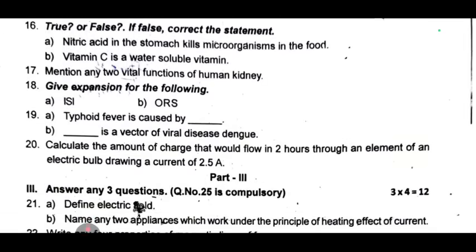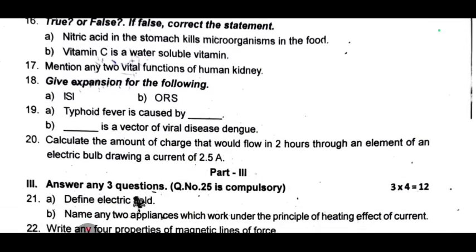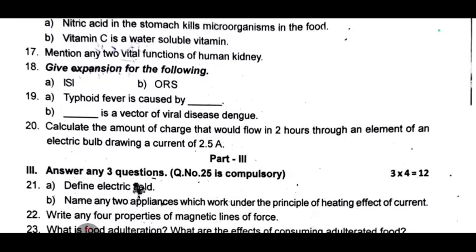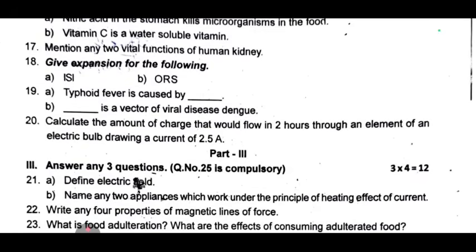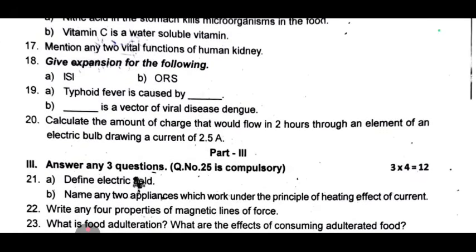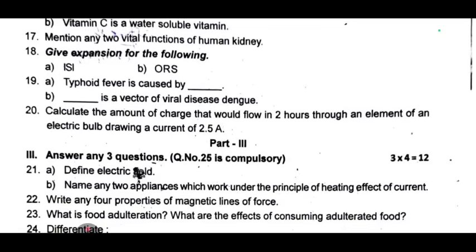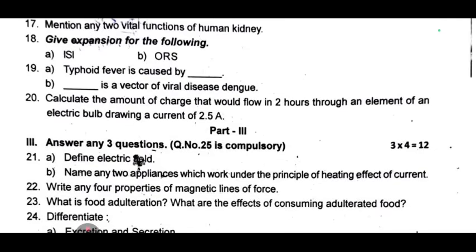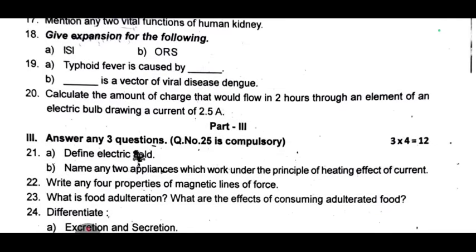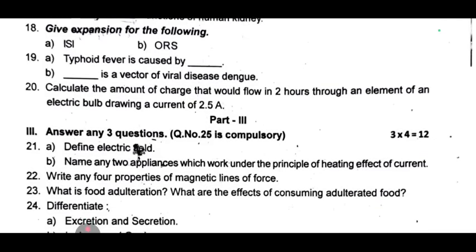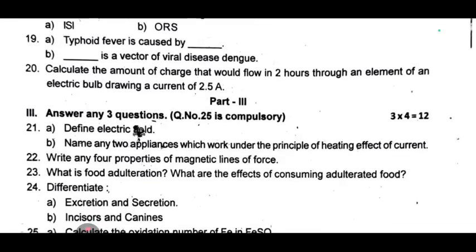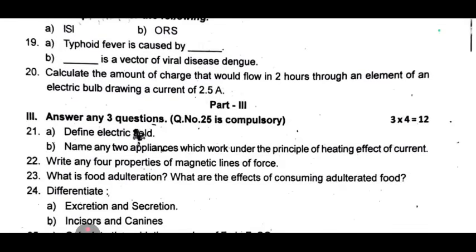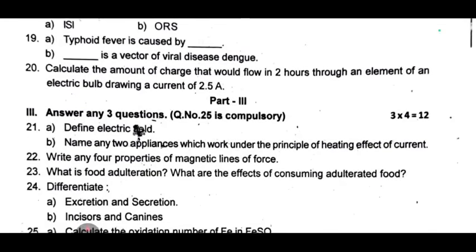Next, Part 3 — any three questions for 4 marks each. Question 25 is compulsory. 21st one: A — define electric field; B — name any two appliances which work on the principle of the heating effect of current. 22nd one: write any four properties of magnetic lines of force. 23rd: what is food adulteration and what are the effects of consuming adulterated food? 24th: differentiate excretion and secretion; B — incisors and canines.